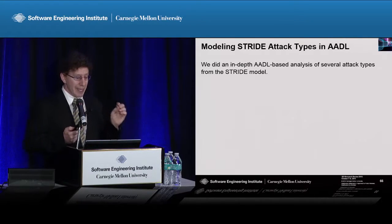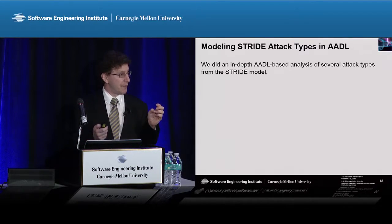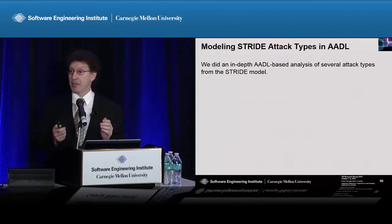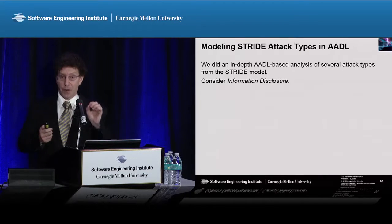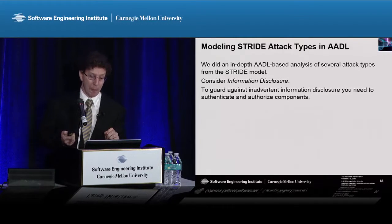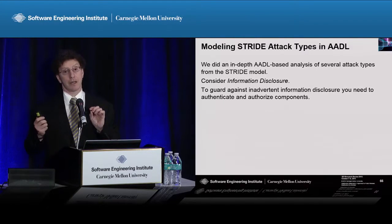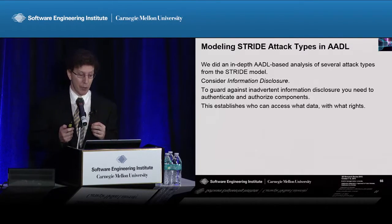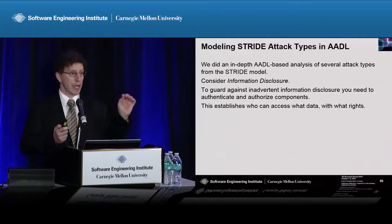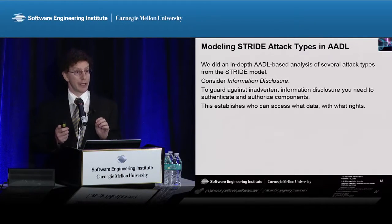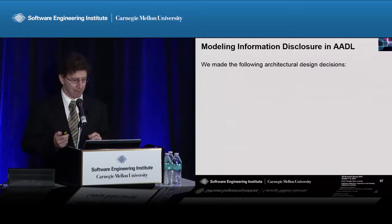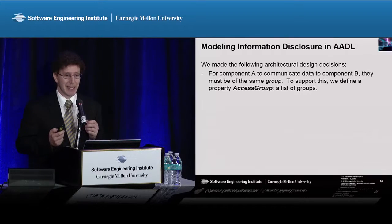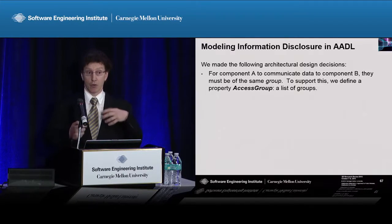We did an in-depth analysis of each of the six attack types based on the STRIDE model. Focusing on information disclosure: if you want to guard against information disclosure, you need to authorize and authenticate components — who can access what data with what rights? Who can read it? Who can write it? Who can they share it with? We made a number of architectural design decisions to reify this.